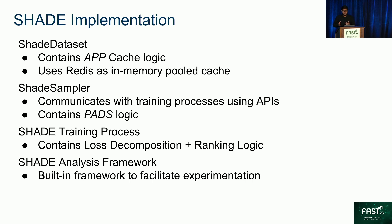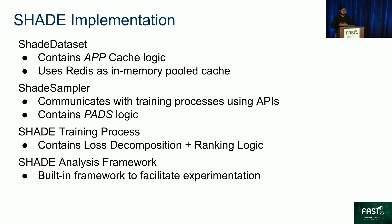Shade consists of mainly four components: the Shade dataset, the Shade sampler, the Shade training process, and the analysis framework. The Shade dataset contains the app cache logic and has the logic for communicating with the in-memory pooled cache, which is a Redis KV store. The Shade sampler communicates with the training APIs and has the logic for the patch sampling policy. The Shade training process has the other two techniques — loss decomposition and ranking logic. There is also a built-in analysis framework to facilitate experimentation and analysis.